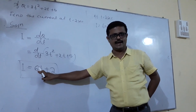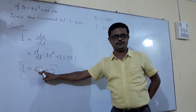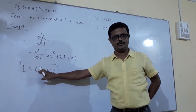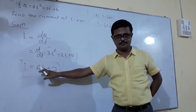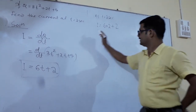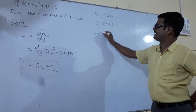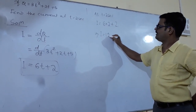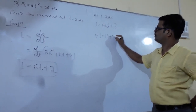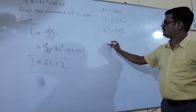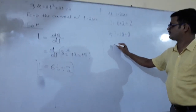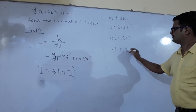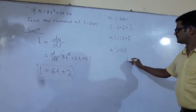Calculating: 6 into 2 gives 12, plus 2 gives 14. So i equals 14 amperes. This is the answer to the first problem.